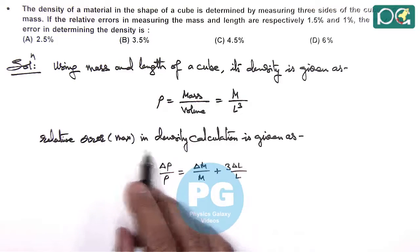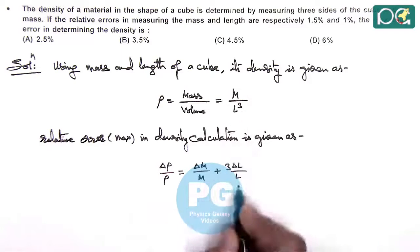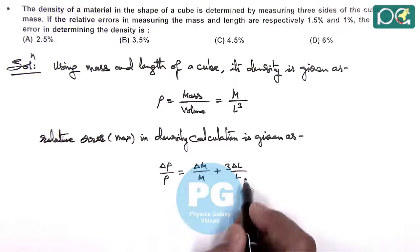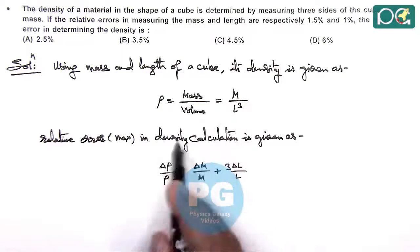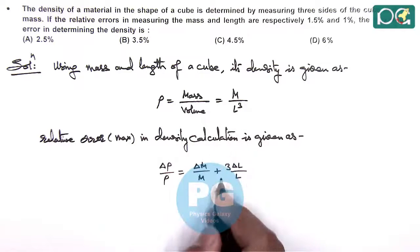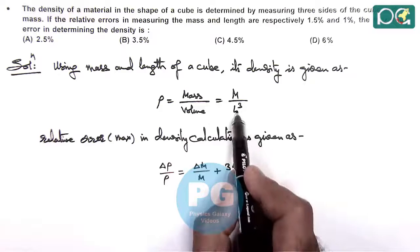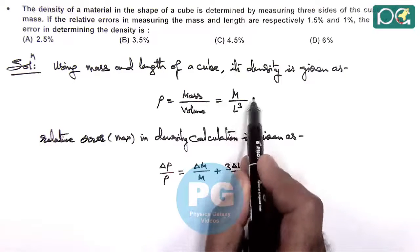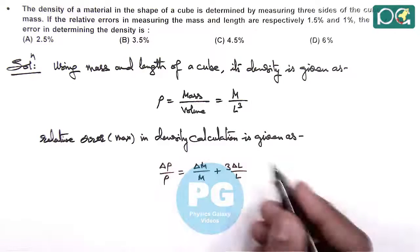For small variation or small errors in mass and length measurement, we can use this relation here. That can also be obtained by taking log on both sides and differentiating the expression we get it. And whether the length is in denominator or numerator, we consider plus because we are calculating the maximum error.